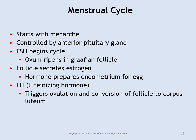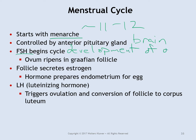Now let's look at the physiology — the monthly changes throughout the female reproductive system. The very first menstrual period is called menarche; in the U.S. the average age is about 11 to 12. This is all controlled by the anterior pituitary gland. The menstrual cycle begins with FSH — follicle stimulating hormone — which triggers development of an egg cell. As that egg cell grows, it produces estrogen, and that estrogen goes to the uterus and begins to prepare it to receive what could potentially be a fertilized egg.